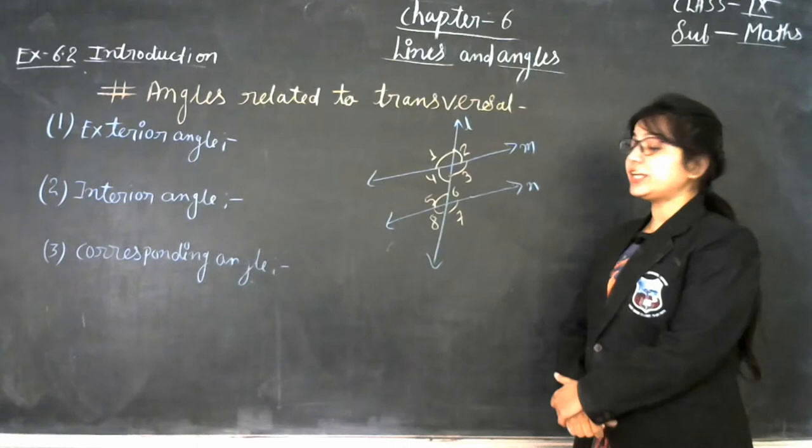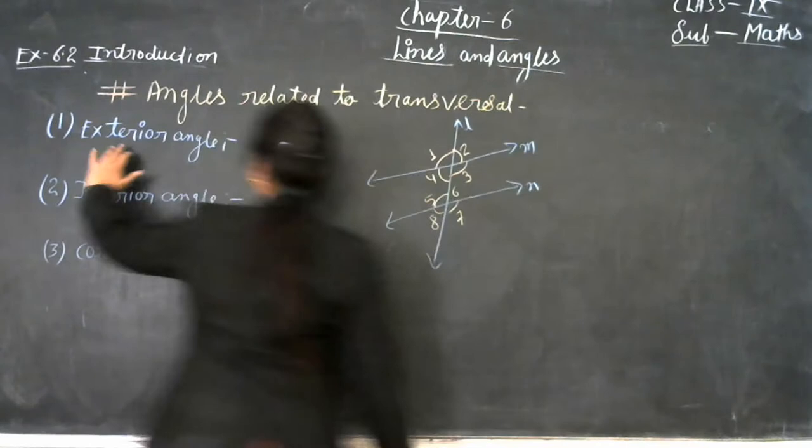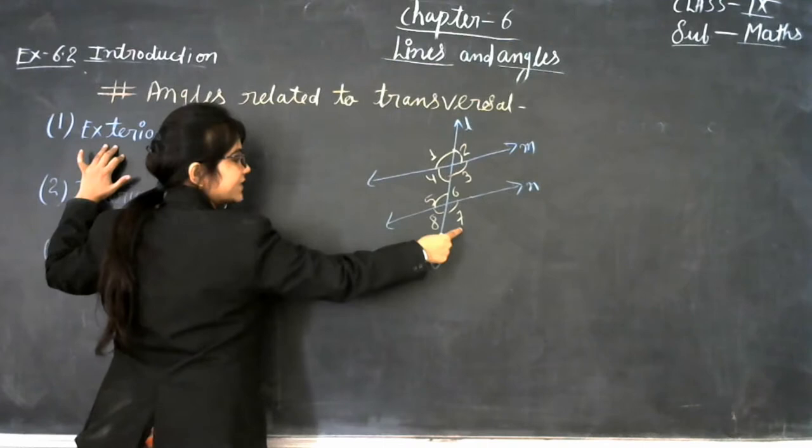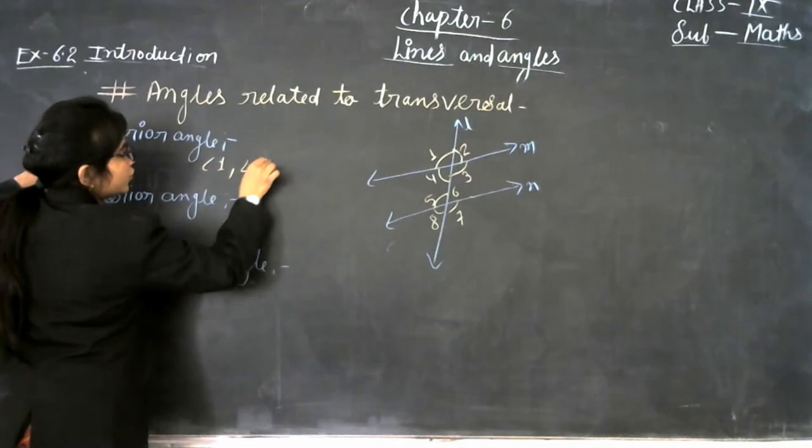Now the next topic is angles related to a transversal. When a transversal intersects two lines, we get some angles. The exterior angles are angle 1, angle 2, angle 7, and angle 8.